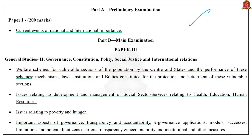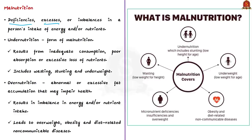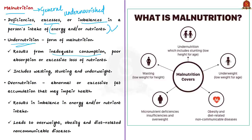The syllabus relevant to this discussion is highlighted for your reference. First, let us understand the term malnutrition. Malnutrition refers to deficiencies, excesses, or imbalances in a person's intake of energy or nutrients. If a person has an energy intake deficit or nutrient intake deficit, that person is undernourished. This term malnutrition is a general term referring to all forms of poor nutrition, but most often it refers to undernutrition resulting from inadequate consumption of nutrients, poor absorption, or excessive loss of nutrients.